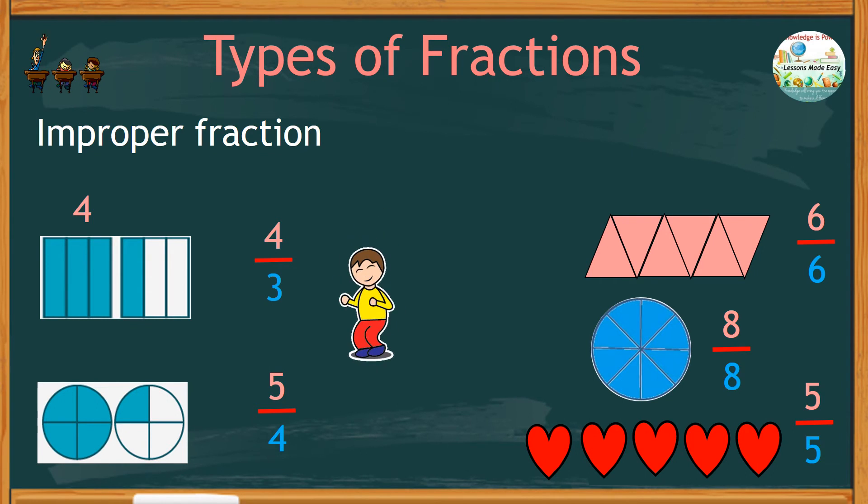4 is greater than 3. 5 is greater than 4. And on the other side, we have 6 is equal to 6, 8 equals 8, and 5 equals 5. What conclusion can you make about an improper fraction?